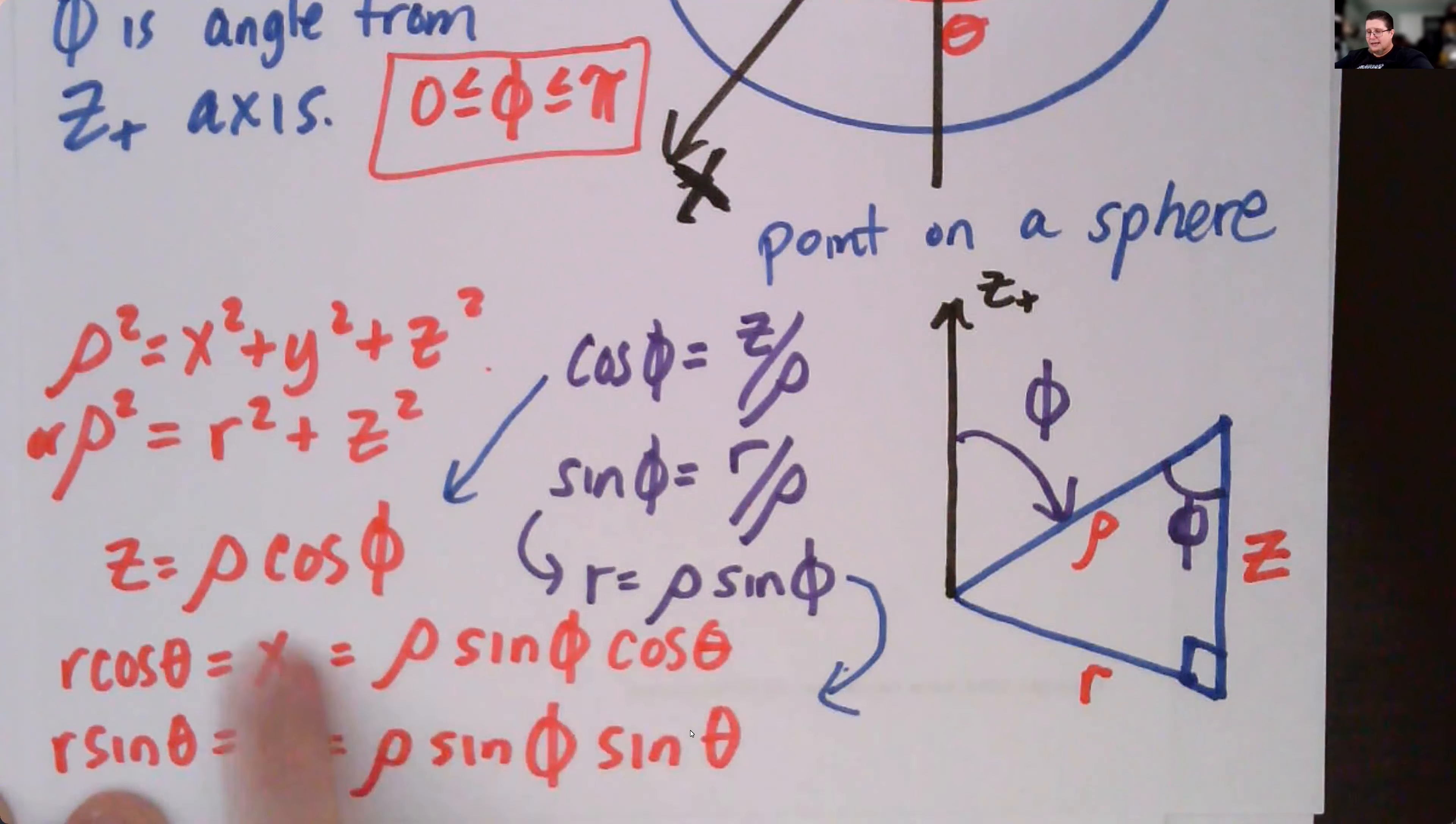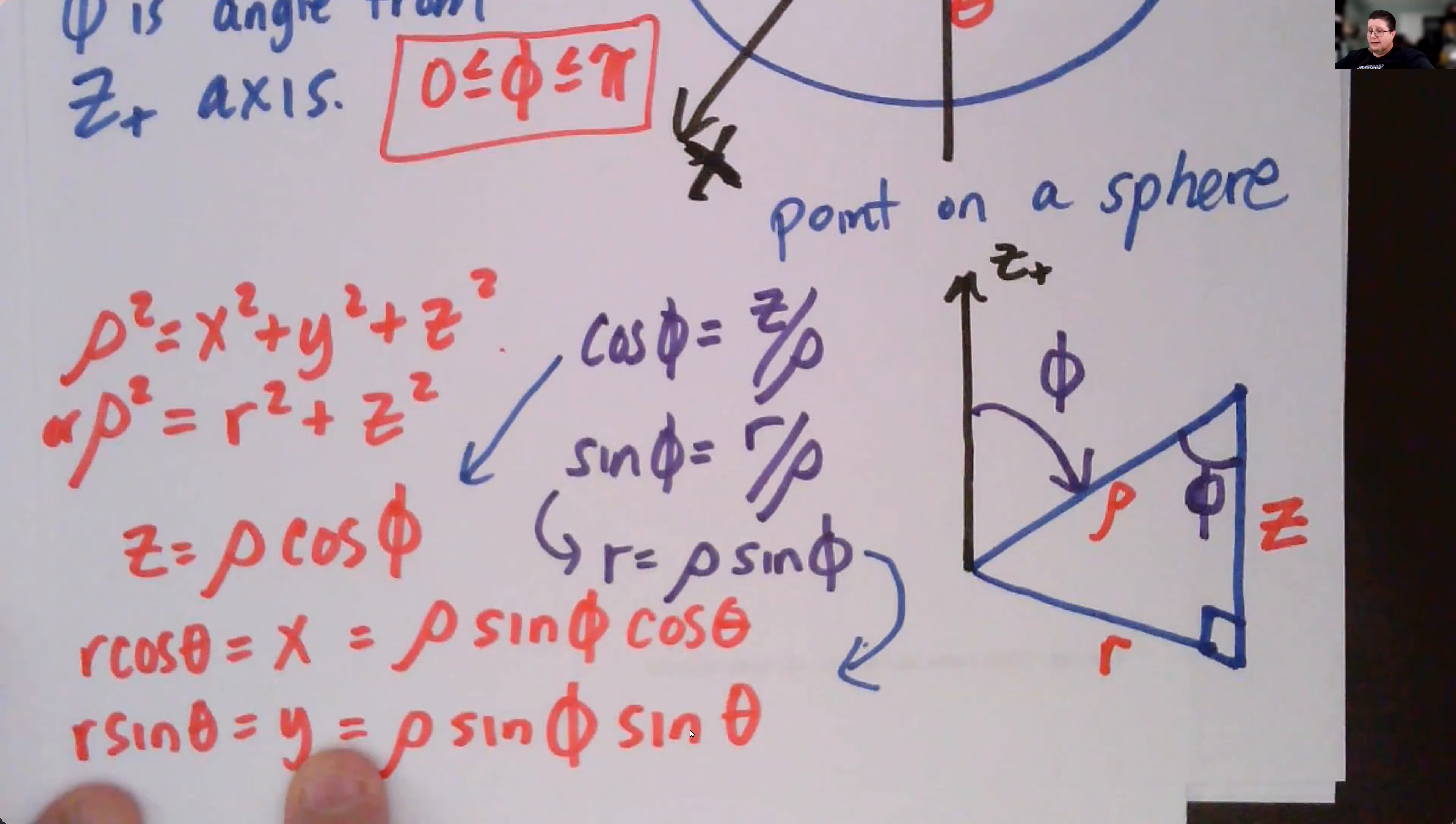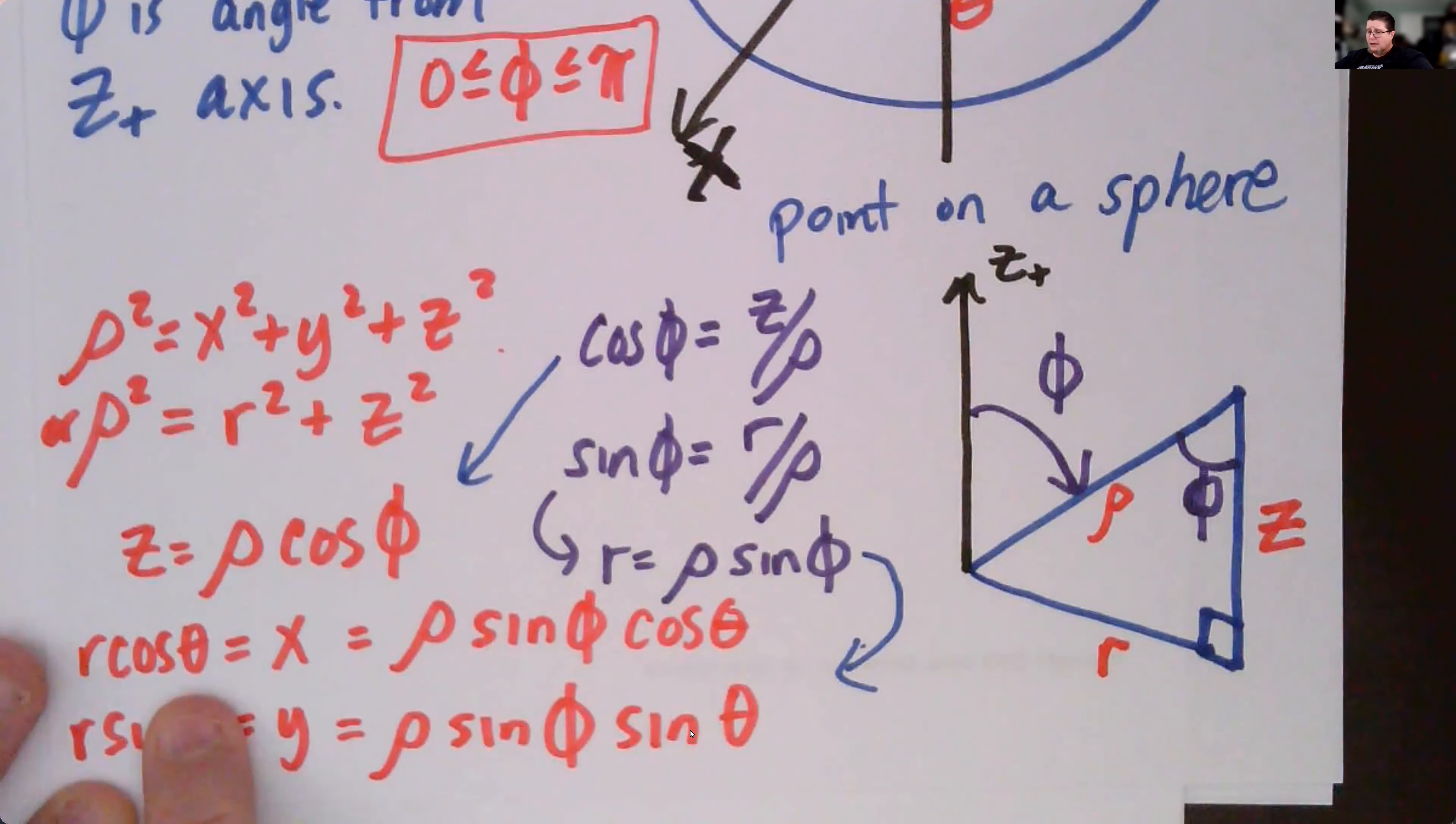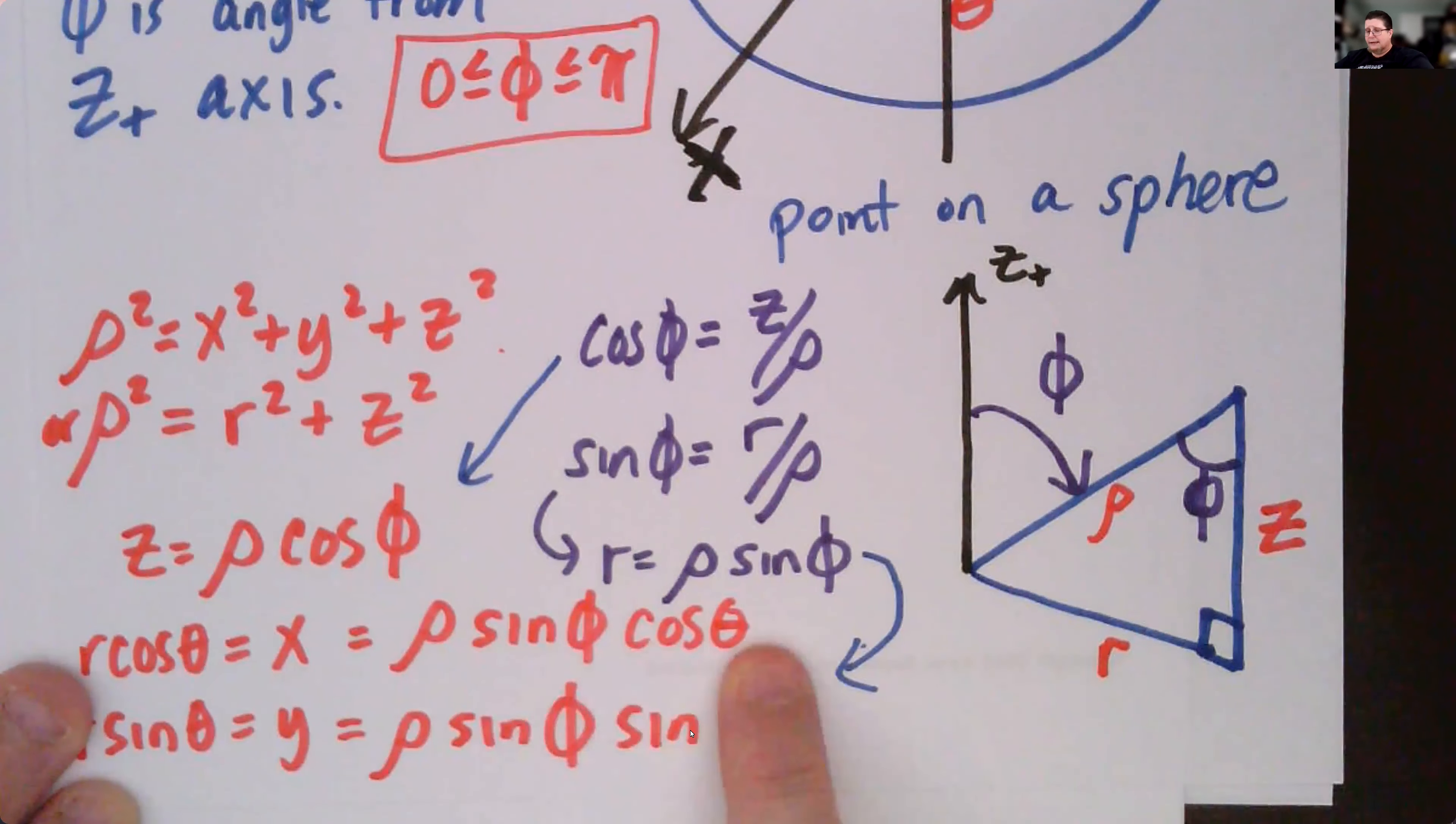We can plug those into x and find x and y that way. x is r cosine theta, but we know r is rho sine phi, so we replace rho sine phi with r and we get x equals rho sine phi cosine theta.